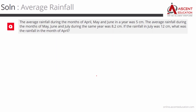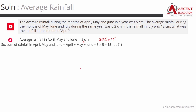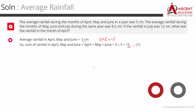Let's start with the basic information given. April, May, June average rainfall is 5 centimeters over 3 months. Number of months multiplied by the average gives us the sum of the rainfall. So the sum of the rainfall in April, May, and June is equal to 3 times 5, which is 15 centimeters.